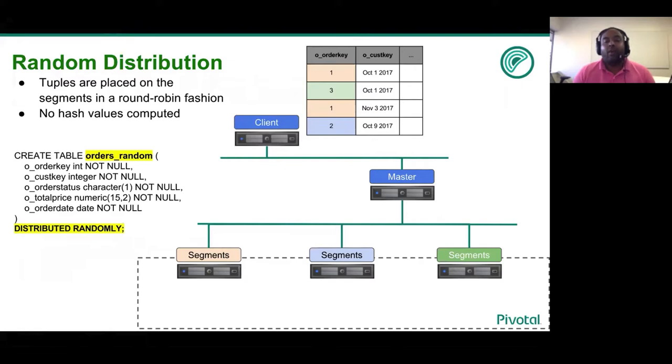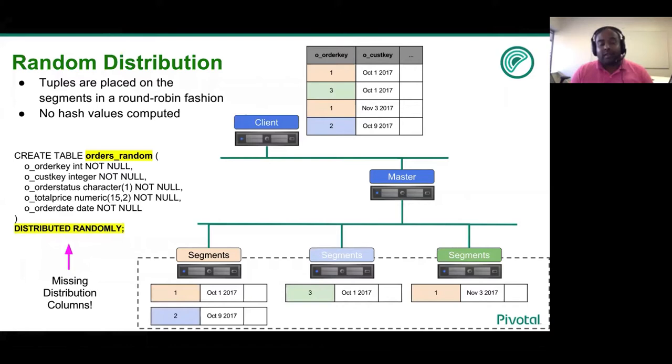Let us assume that the table orders has four tuples. These four tuples when you specify random distribution is scanned one by one and sequentially placed in a round-robin fashion across these four segments. As you can see, tuples that are of order key one are now placed one in segment one and one in segment three. This is based on the order or the sequence in which the order tuples are inputted.